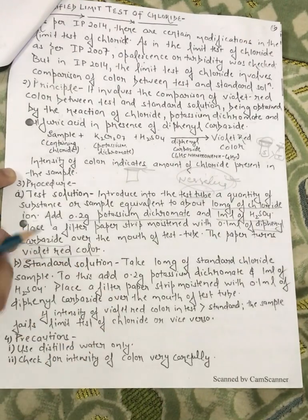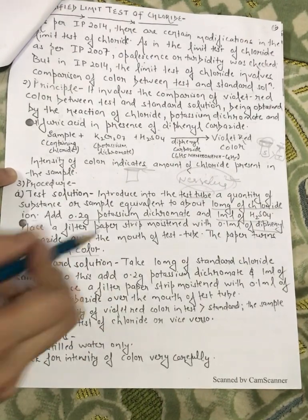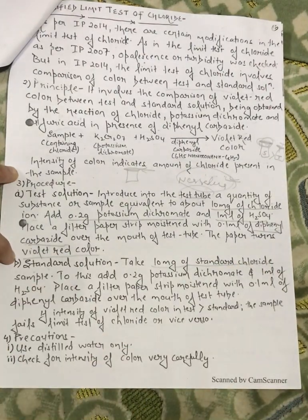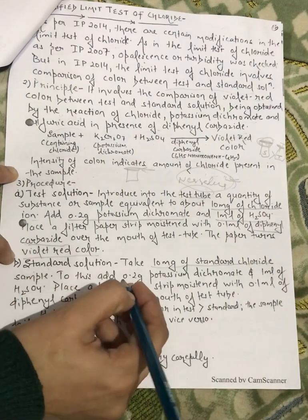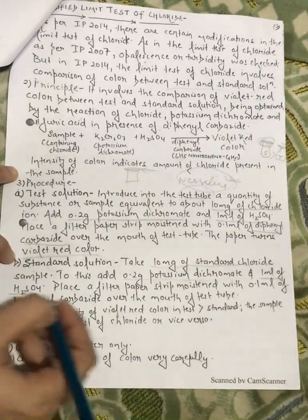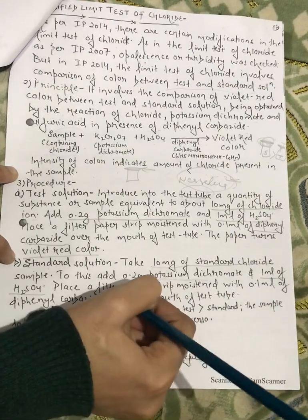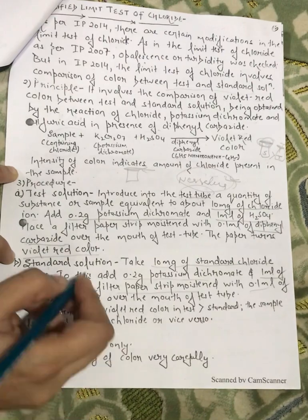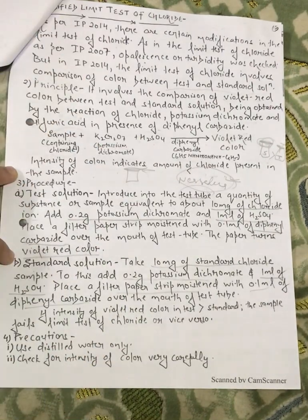Now we will prepare a standard solution. We will take 10mg of standard chloride sample which we will get from IP. To this add 0.2g potassium dichromate and 1ml of sulfuric acid. Then we will place it on the face, we will place it in the face. Moisturate with 0.1ml of diphenyl carbozide similar to the test solution.